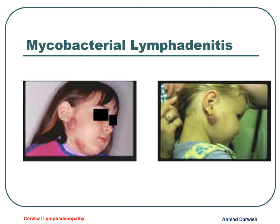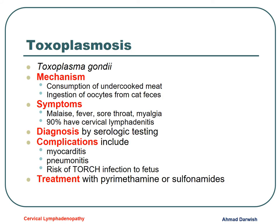These images show the violaceous discoloration of the skin above the lymph nodes in atypical mycobacteria. Regarding toxoplasmosis — Toxoplasma gondii — it is usually caused by consumption of undercooked meat or ingestion of oocysts from cat feces. Toxoplasmosis has systemic manifestations including cervical lymph nodes. We diagnose it by toxoplasma immunoglobulins, and complications include pneumonitis and myocarditis. Treatment is with pyrimethamine and sulfonamides.